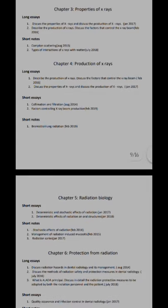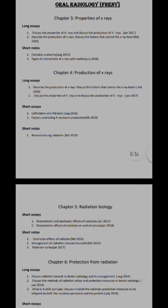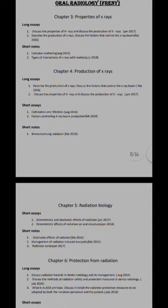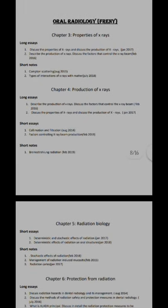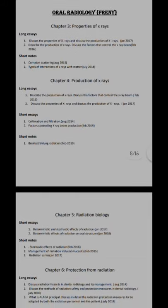Mention the types of radiation — Bremsstrahlung radiation and characteristic radiation — which form the basis of X-ray production. For factors that control the X-ray beam, write about exposure time, mA (milliamperage), kVp (tube voltage), filtration, collimation, and the inverse square law. Briefly explain what happens to the final image when you adjust these parameters such as kVp and mA settings, depending on the marks allocated.